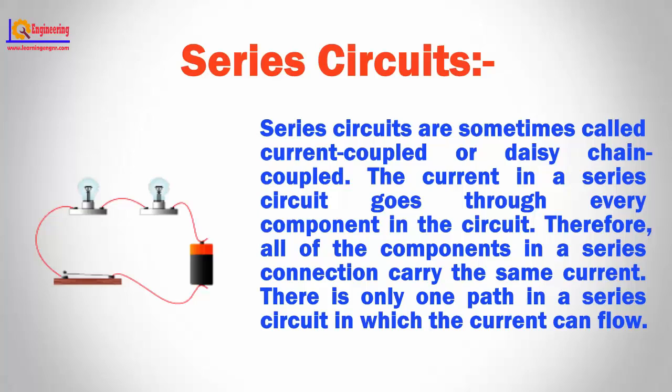Series circuits are sometimes called current coupled or daisy chain coupled. The current in a series circuit goes through every component in the circuit. Therefore all the components in a series connection carry the same current. There is only one path in a series circuit in which the current can flow.